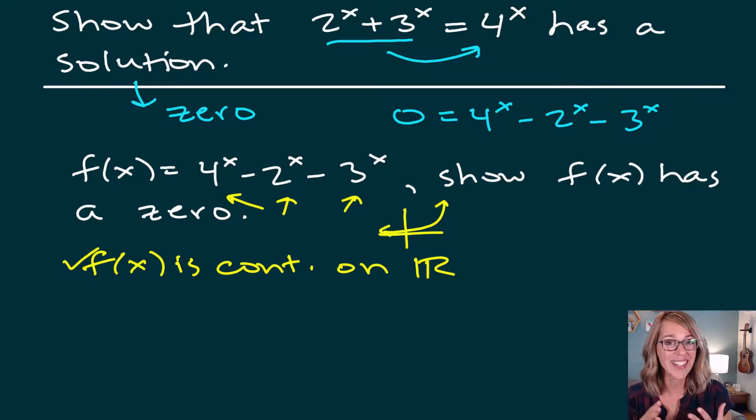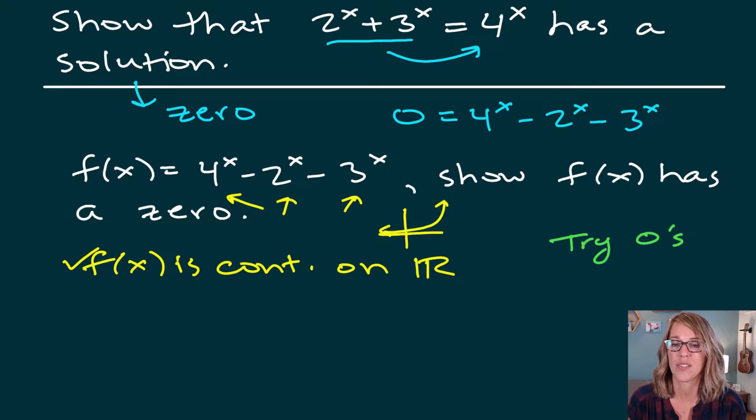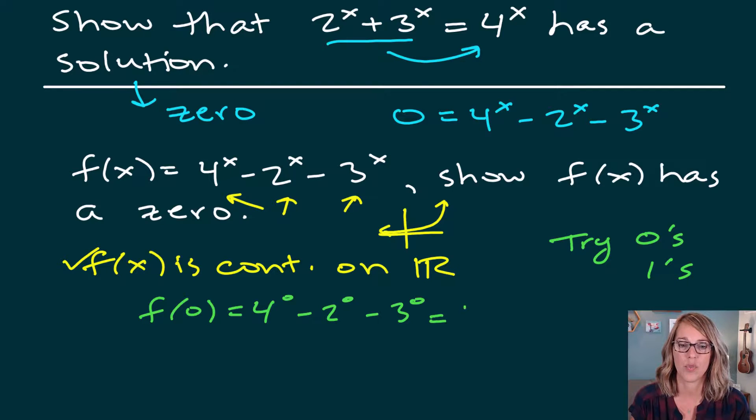Next, I'm not given an interval. We were in the last one looking for that zero on an interval zero to pi. I don't have an interval, so this time I'm going to make one up. Zeros and ones are super nice to try. So I'm going to try zeros, and I'm going to try ones. I'm looking for an f value to give me positive and an f value to give me negative. Let's go ahead and start with f of zero. So f of zero is equal to four to the zero minus two to the zero minus three to the zero. This is equal to one minus one minus one, which is equal to negative one. So we've got our negative.